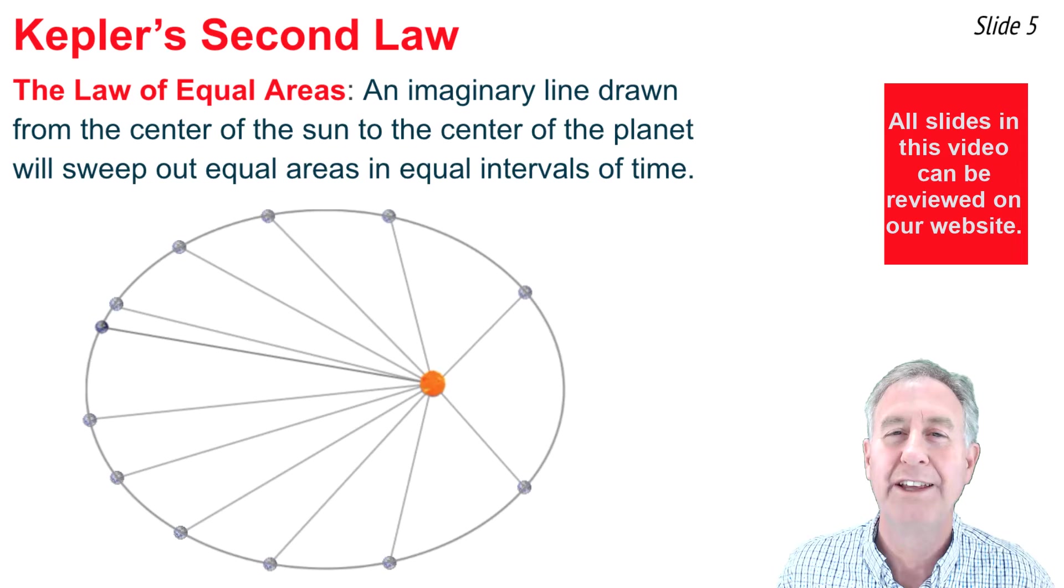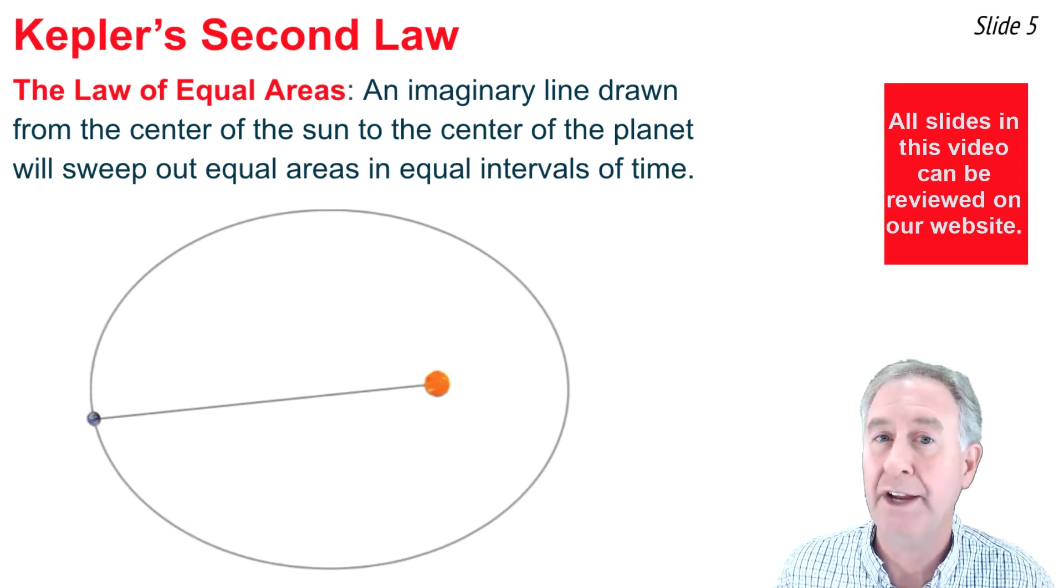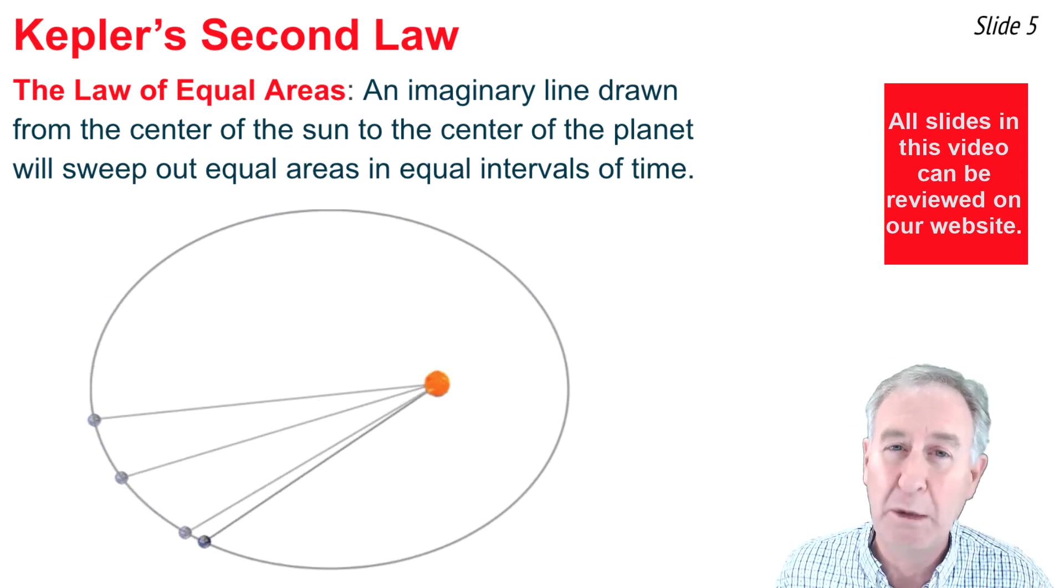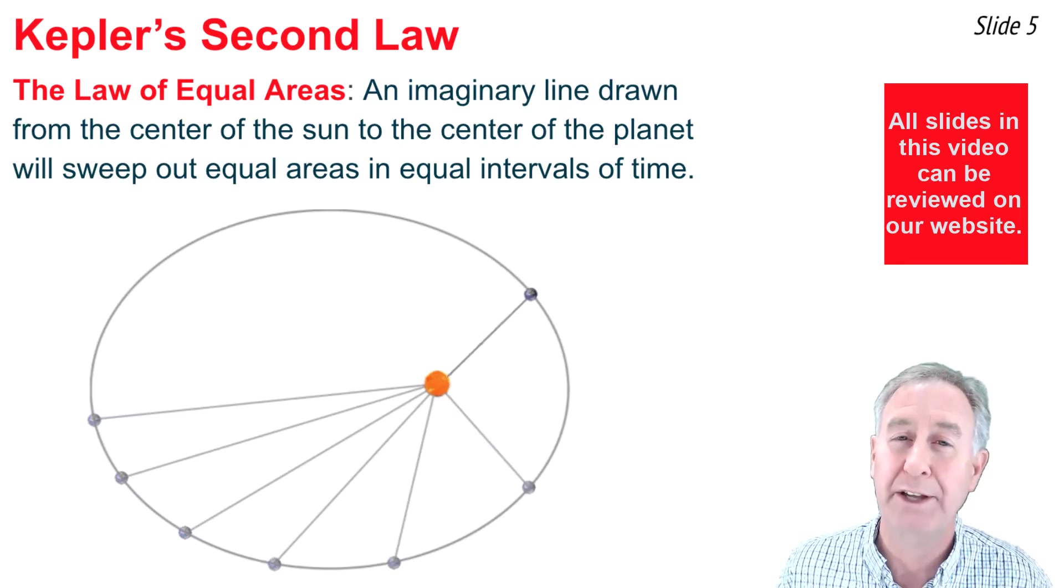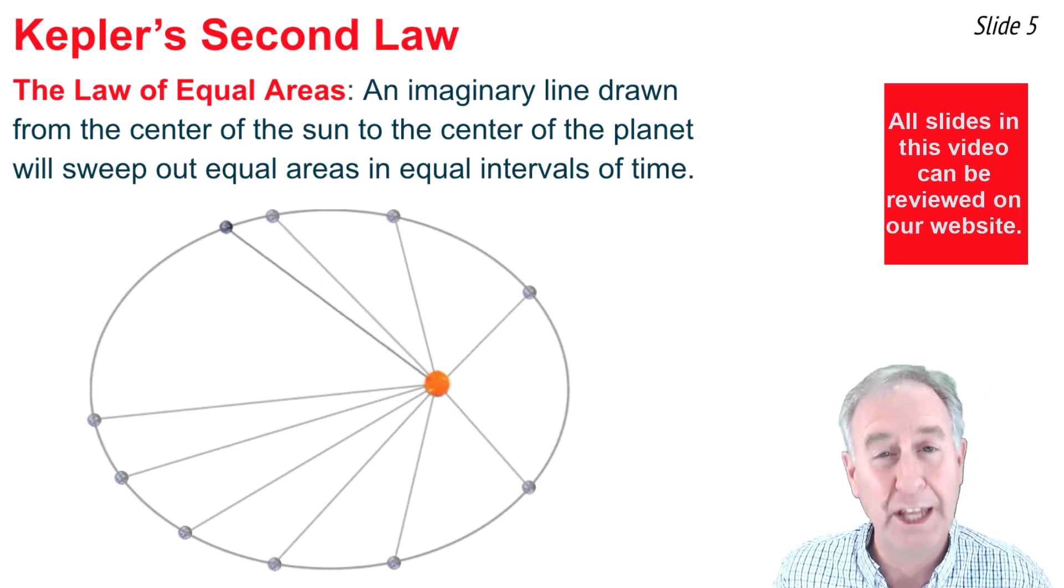Once one orbit is completed, the planet has swept out 12 areas that are done in equal periods of time, and according to Kepler's second law, these areas are equal.